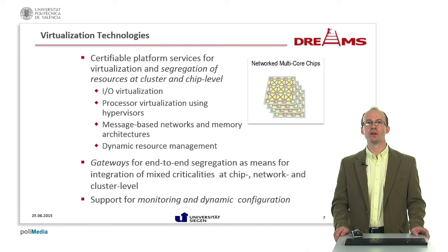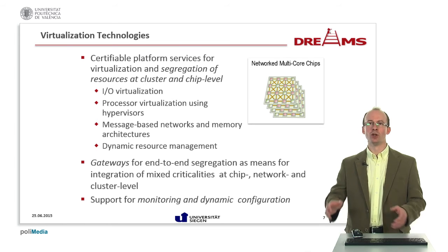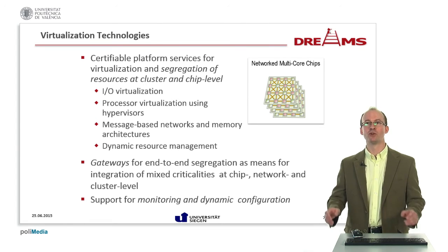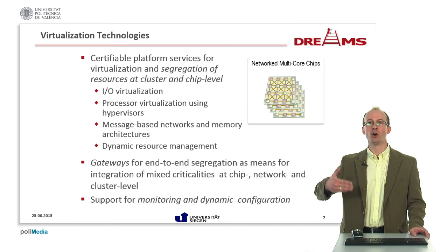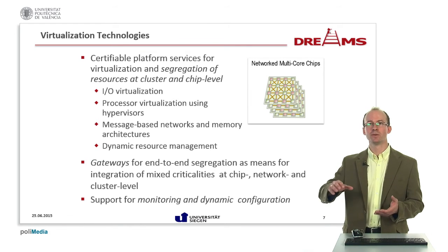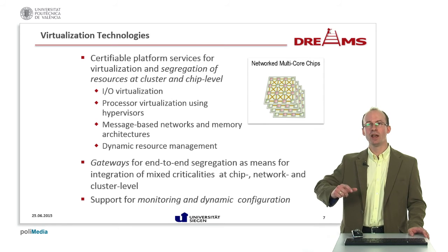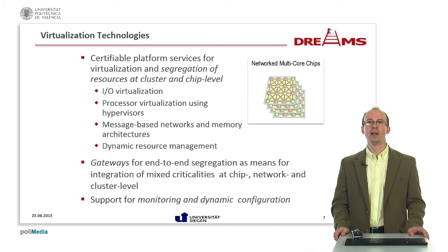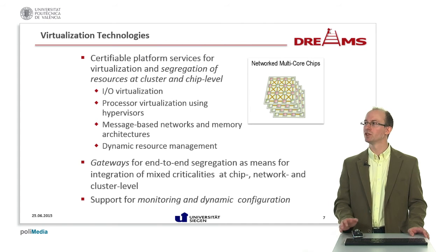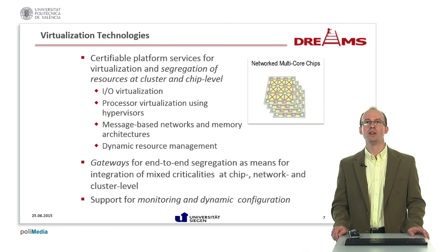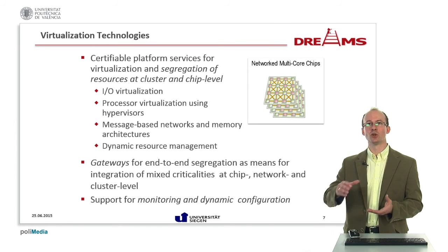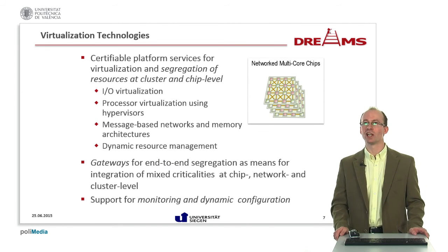The gateways in the architecture are responsible for end-to-end segregation. These gateways provide the bridge between the on-chip networks that interconnect different cores on a processor and the off-chip networks used to interconnect different chips. As shown in the picture on the right-hand side, we have multiple chips each with a network on a chip interconnecting the different cores, and the gateway interconnects its on-chip network with the off-chip network of this cluster of multi-core chips.